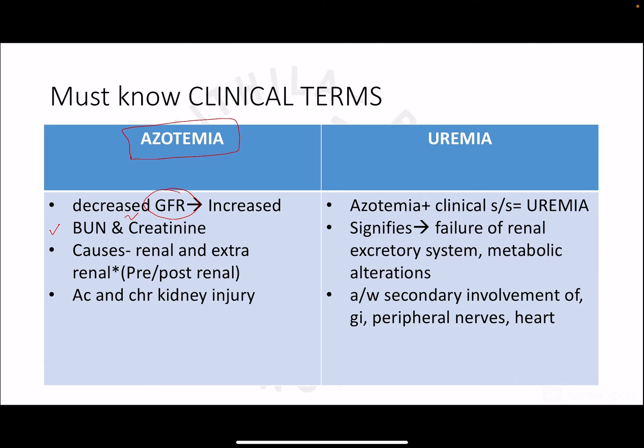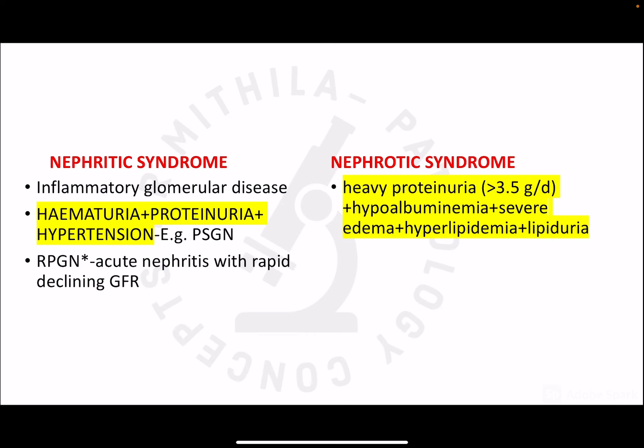Uremia is azotemia plus the clinical signs and symptoms associated with elevated blood urea nitrogen and creatinine. Uremia signifies failure of the renal excretory system with metabolic alterations in the body. It can secondarily involve the gastrointestinal system causing gastroenteritis, the nerves causing peripheral neuropathy, and even the heart causing uremic pericarditis. So uremia affects not only the kidney but also systemic organs.